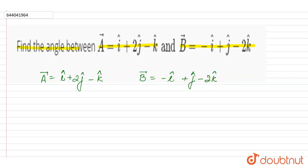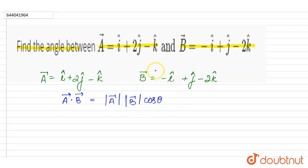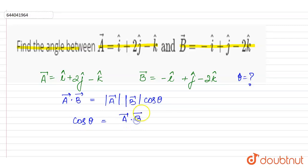We know that a dot b — that is the dot product of vector a and vector b — is equal to the magnitude of a vector into the magnitude of b vector into cos theta. And theta is the angle between vector a and vector b, which we have to find.